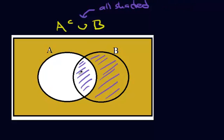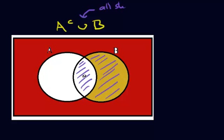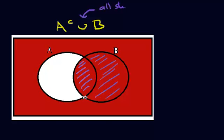Start again with a different color. In this case, my final answer is the entire red region. So that's using the method of just actually shading everything in and then figuring out what regions count.